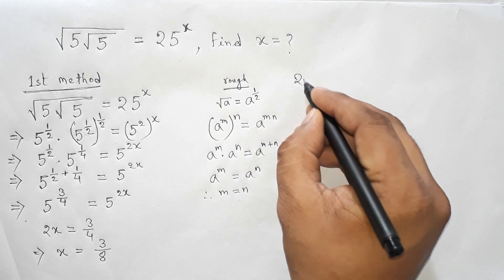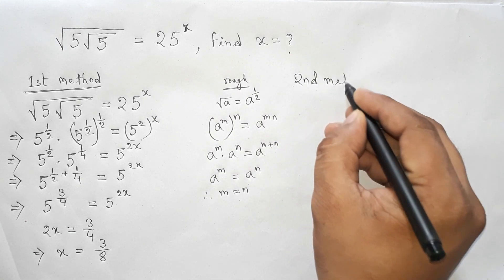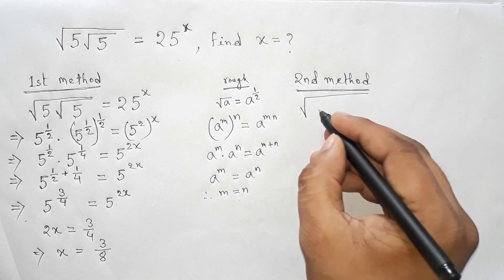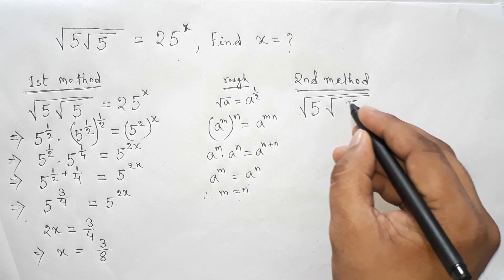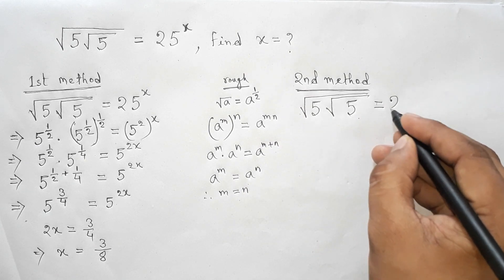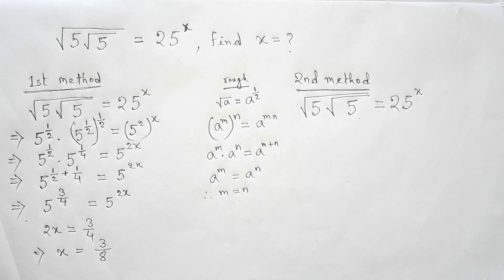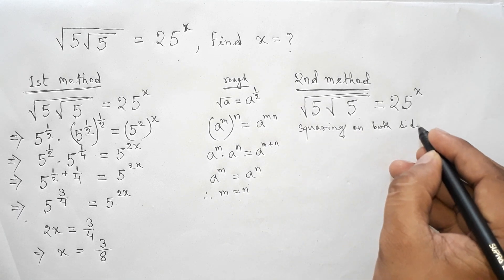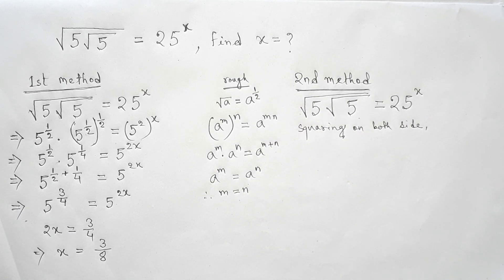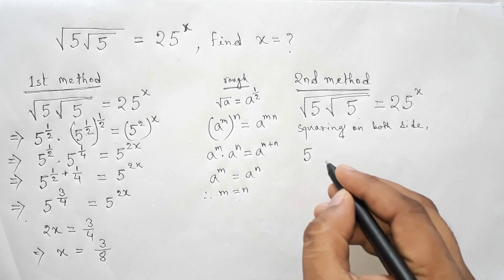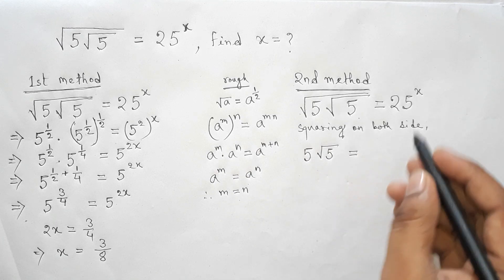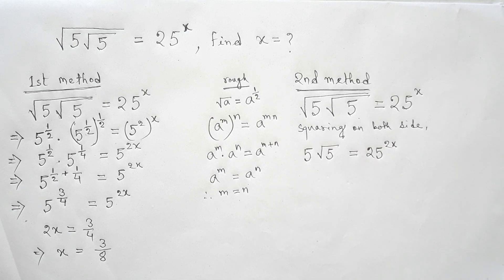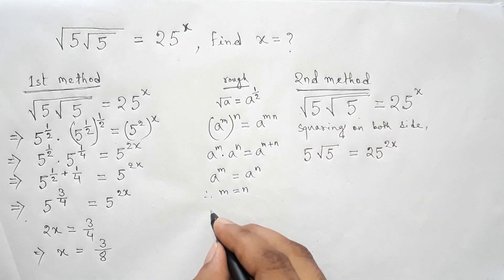Now using the second method to find the value of x. Given root over 5 under root over 5 equals 25 to the power x, we square both sides. Squaring the left side: root 5 squared gives 5, leaving us with 5 times root 5 equal to 25 to the power 2x.